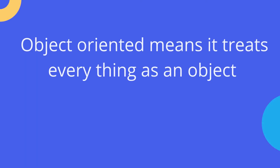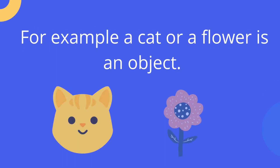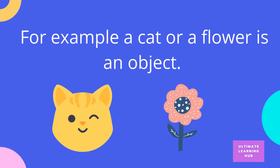Object-oriented means that it treats everything as an object. For example, in real life, a cat or a flower is an object.